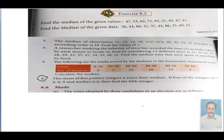The mean value of 5 positive integers equals the median. If 4 integers are 3, 4, 6, and 9, and the median is 6, find the 5th integer.